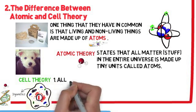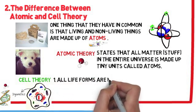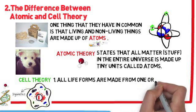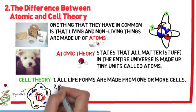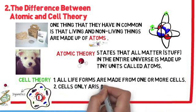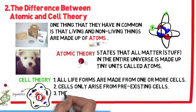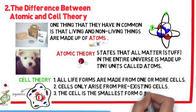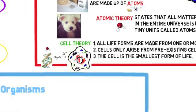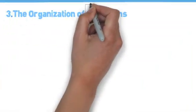Cell theory states three things. Number one, all life forms are made from cells, like my dog Mac, or they can be one cell, like the bacteria. Number two, all cells arise from pre-existing cells. There's no spontaneous generation. Number three, the cells are the smallest form of life. Now that leads us to organization of human organisms.